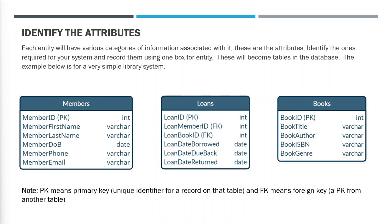This is the primary key — a unique identifier for a record on a table, meaning every member will have a different member ID. In the loans table, loan ID is the primary key. We've also got loan member ID — the member taking out that loan — and loan book ID — the book being loaned. These are both foreign keys because they're primary keys from another table. Then we have date borrowed, date due back, and date returned, which can be null if the book hasn't been returned. Finally, the books entity has a book ID because the library might have several copies of the same book — they would all share the same ISBN, so the library needs a way of uniquely identifying each copy.